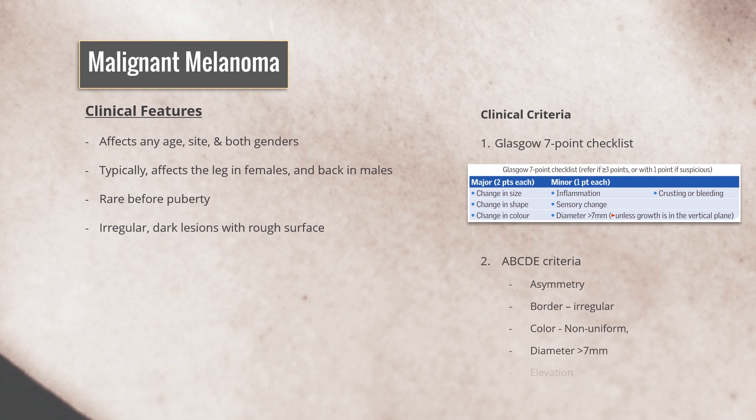ABCDE Criteria include the following features: Asymmetry of the lesion; Border, which is irregular in melanomas; Color, which is non-uniform; Diameter greater than 7 mm; and Elevation of the lesion.